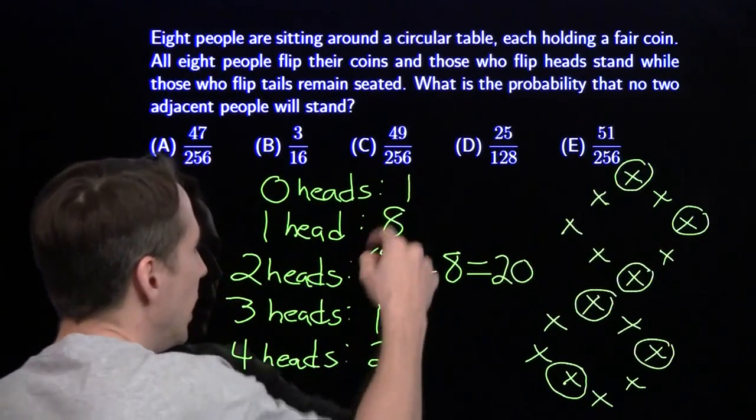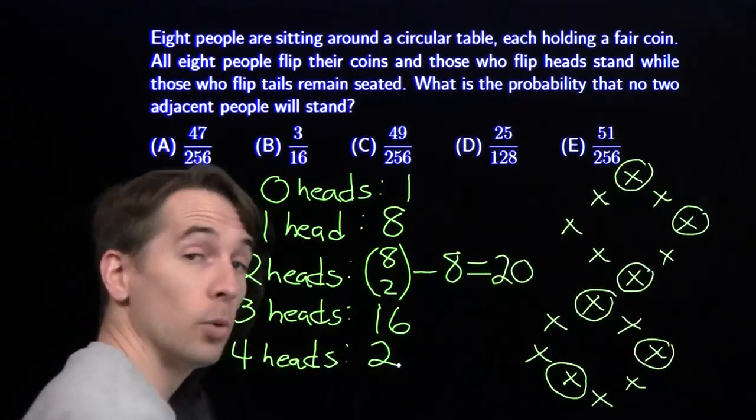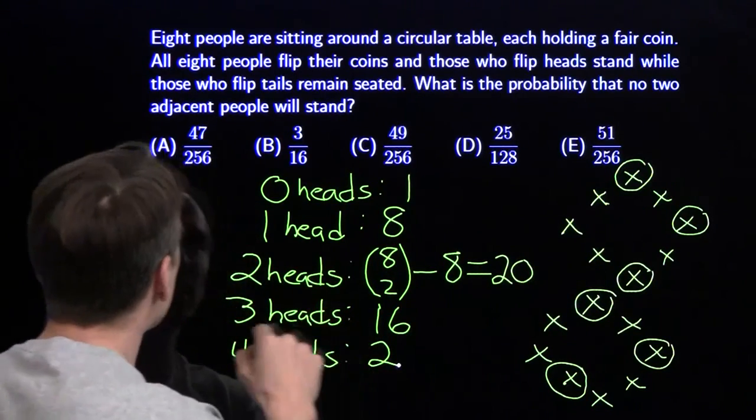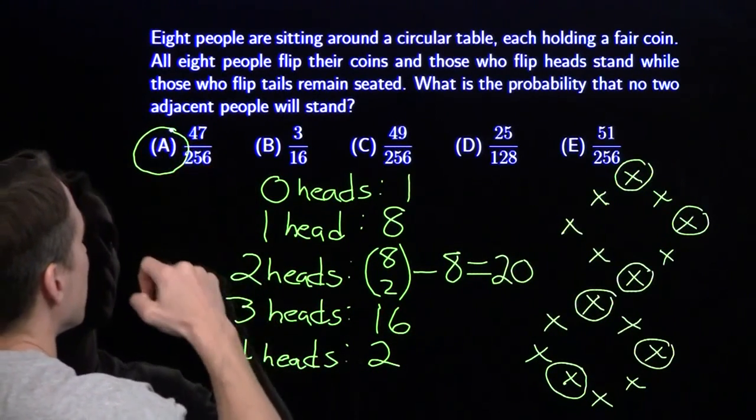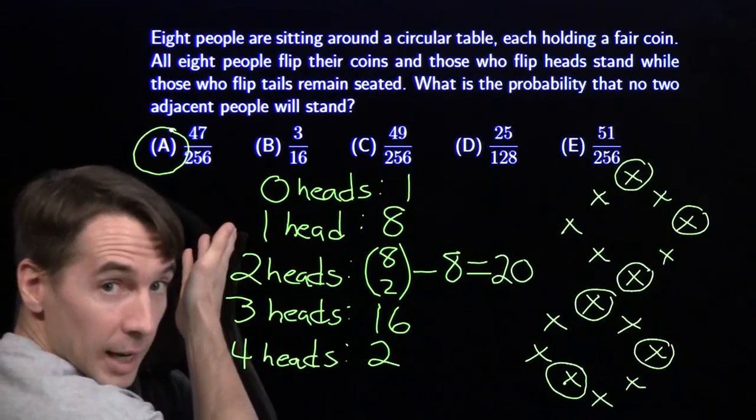So now we just have to add them up. Two and eight gives us 10, add on 20 gives us 30, add the 16 and the one. That gives us 47 successes out of 256 possible. There's our answer and we're done.